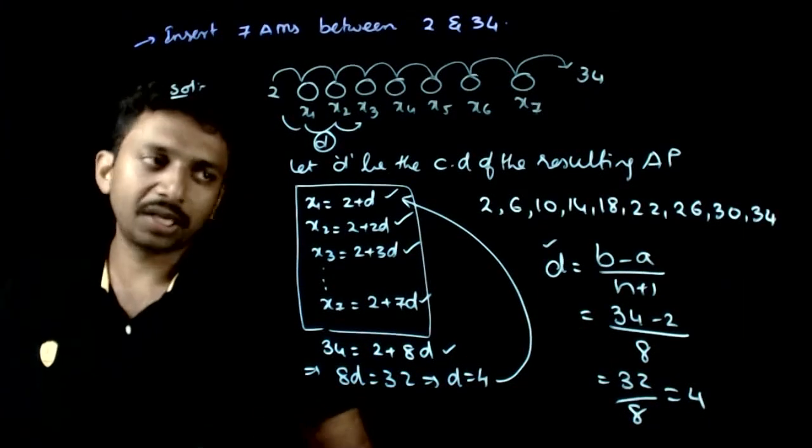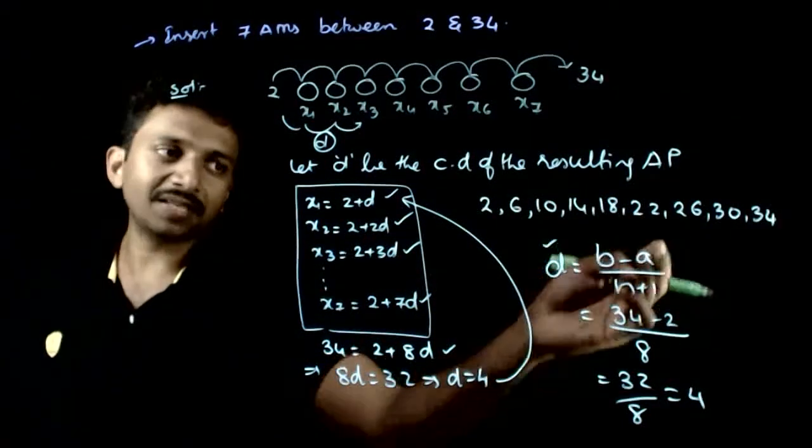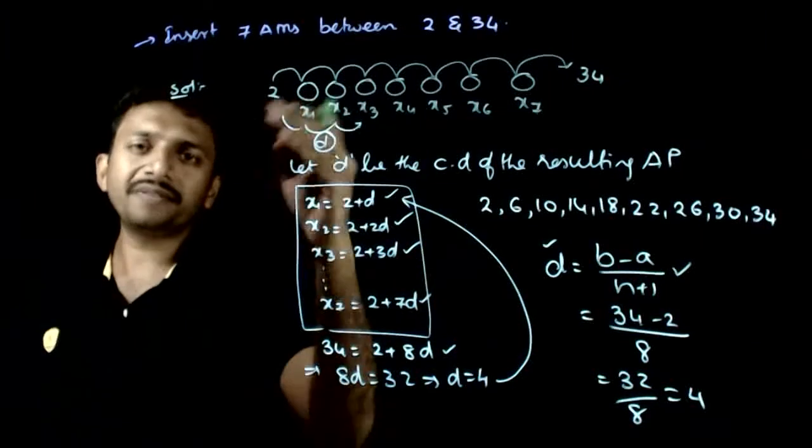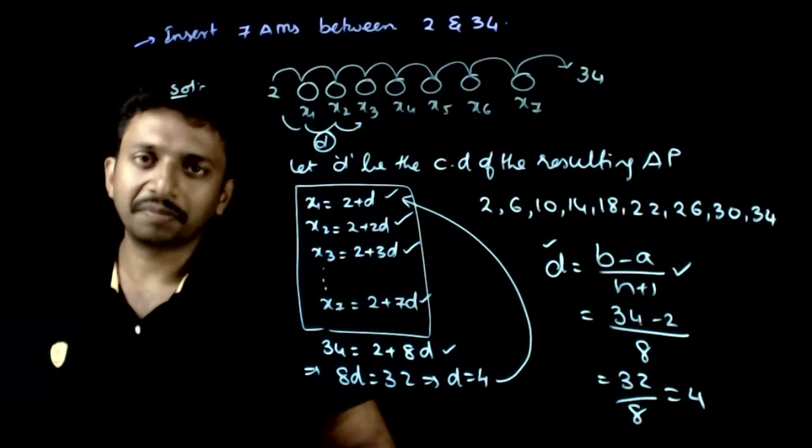If you remember the formula, it will be very fast. So common difference in this case is b minus a by n plus 1. Once you get the common difference, you can just insert the arithmetic means very easily. Thank you.